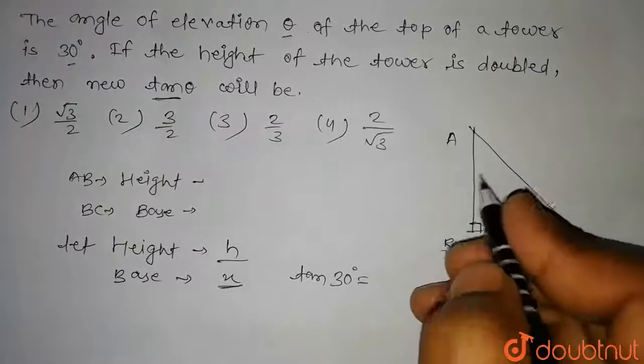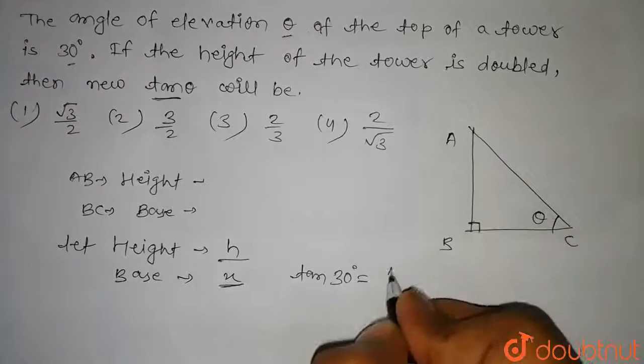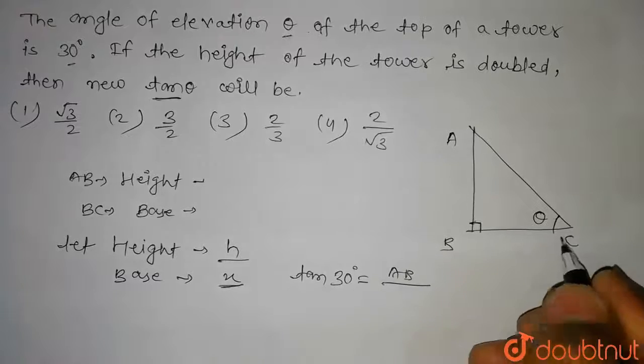So tan theta will be equal to perpendicular upon base. So the perpendicular is AB and the base is BC.